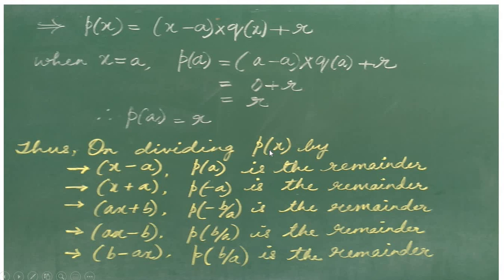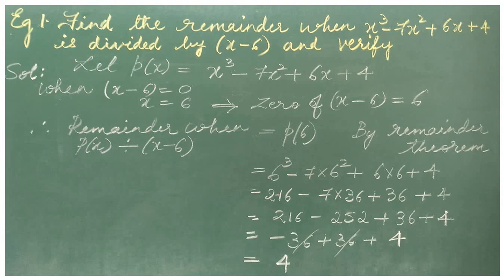When p of x is divided by b minus ax, then p of b by a is the remainder, where b by a is the zero of the polynomial b minus ax. Let's take an example. Find the remainder when x cube minus 7x square plus 6x plus 4 is divided by x minus 6 and verify. Let p of x be equal to x cube minus 7x square plus 6x plus 4.